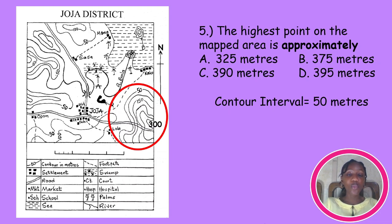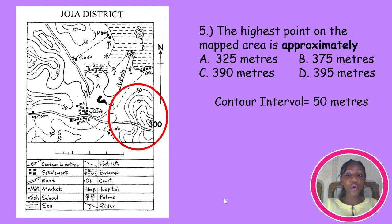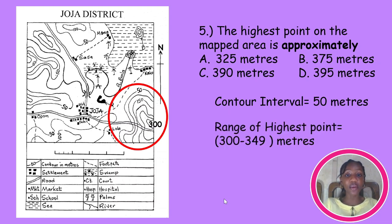Some people might argue why not any of the other options, since all options have 300-something. The reason 325 is the best answer is because our highest contour is 300, and the next contour after that would be 350. Since we can't see that contour on our map, the highest point will be between 300 and 349, making 325 meters the best answer as it's the only one that falls within this range.